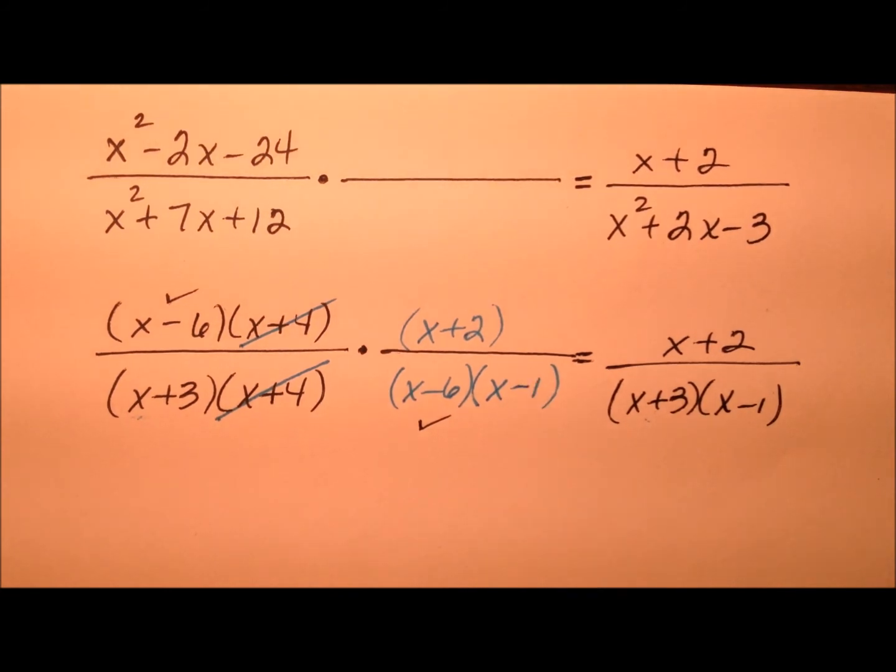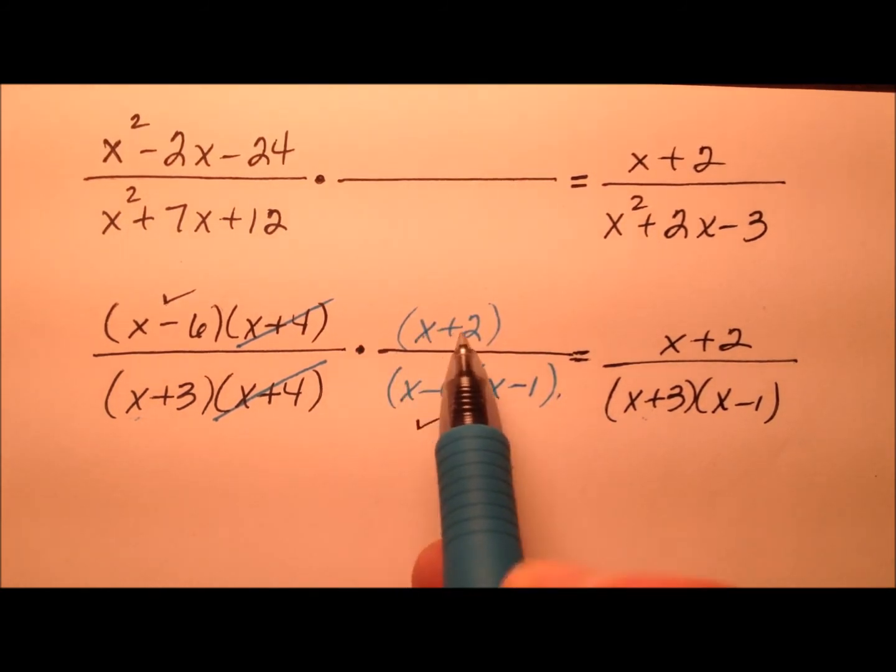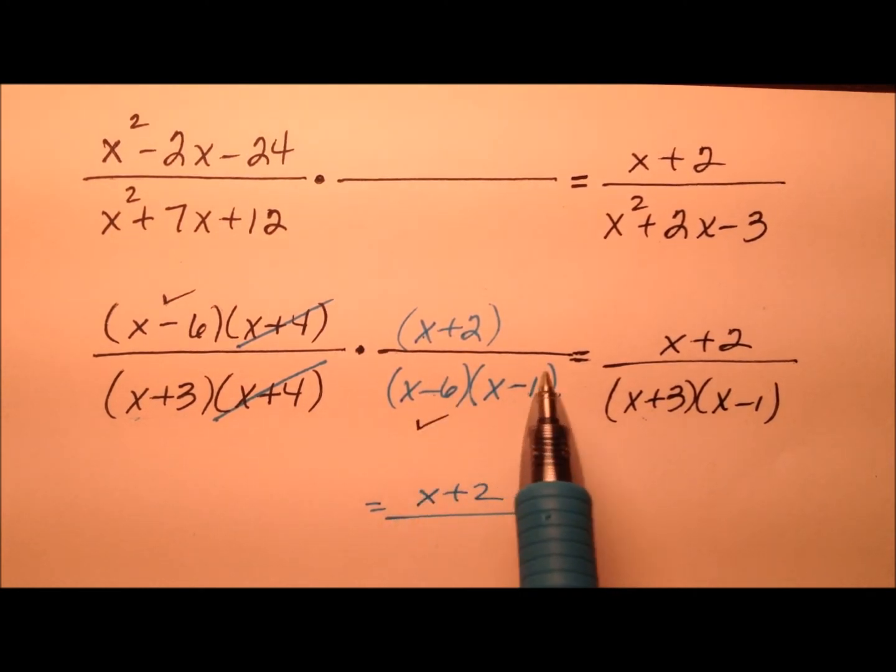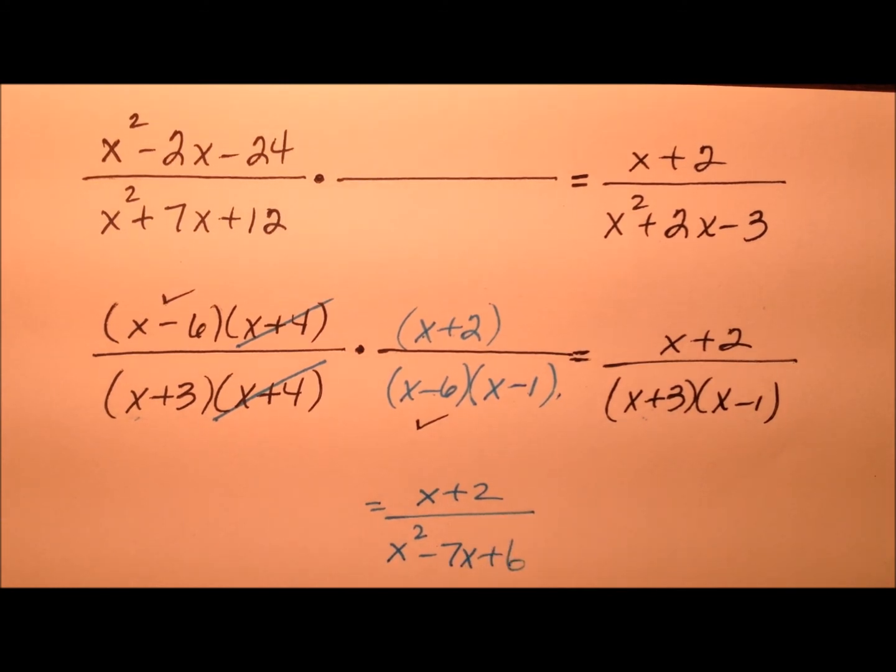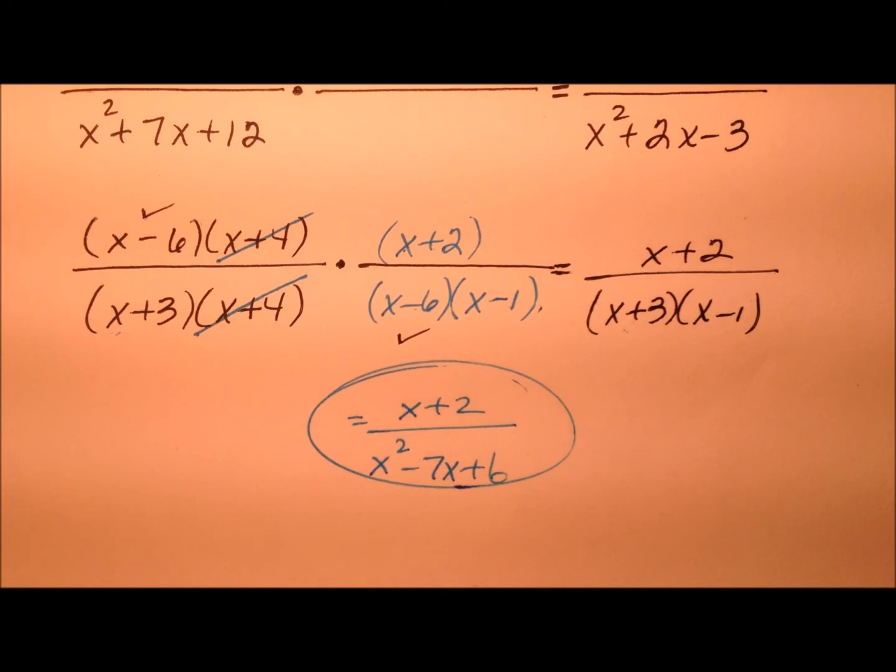Okay, so I know now that this rational expression must have been x plus 2 on top, and then these two binomials that I can multiply together on bottom. Okay, so there's my answer to the question.